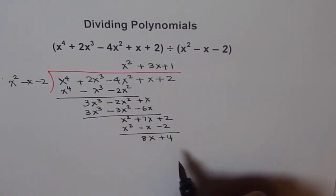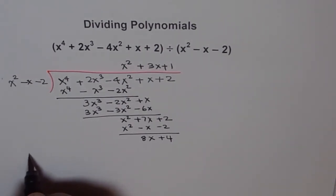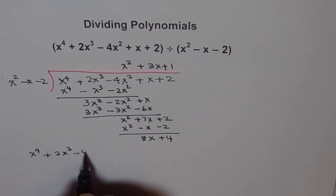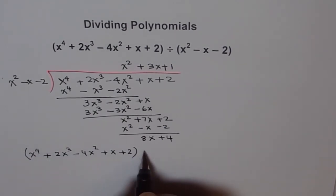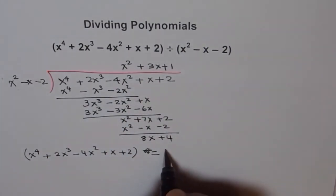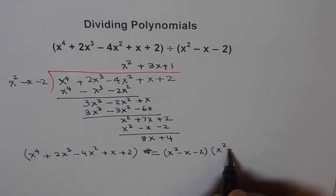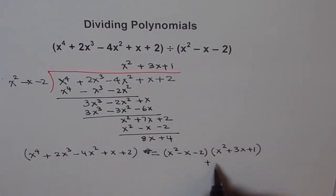So the remainder is 8x plus 4. Whenever you divide, you should write your division statement. The division statement here will be: x to the power of 4 plus 2x cubed minus 4x squared plus x plus 2, which is f(x), equals x squared minus x minus 2 times x squared plus 3x plus 1, plus the remainder 8x plus 4.